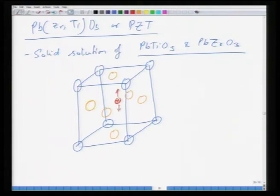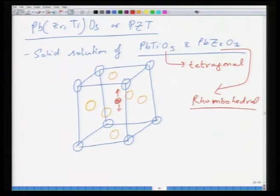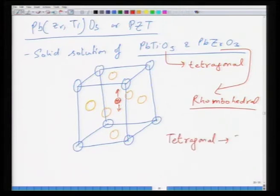PZT can adopt either a tetragonal or rhombohedral structure depending on the proportion of lead titanate and lead zirconate. The parent structure of lead titanate is tetragonal in the ferroelectric phase, while lead zirconate-rich compositions are rhombohedral. If the structure is tetragonal, titanium is shifted along 001; if rhombohedral, it is shifted along 111.